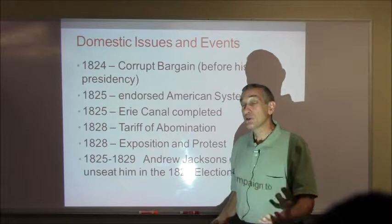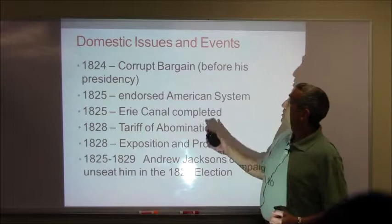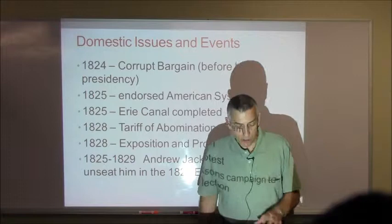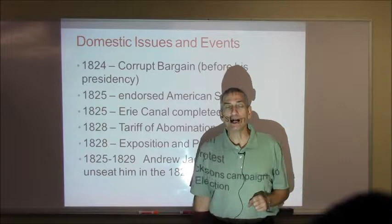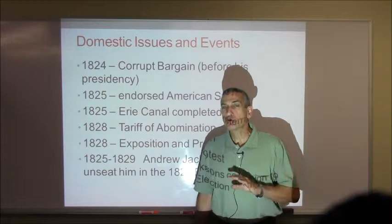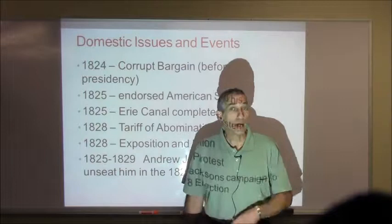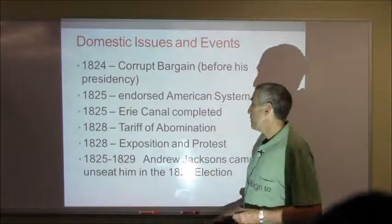Domestic issues and events: we have the corrupt bargain, which actually occurs during the Monroe presidency but hovers over the Quincy Adams presidency. He endorsed Henry Clay's American System — after all, Henry Clay was his Secretary of State. The Erie Canal was completed in 1825, an example of state-sponsored internal improvements. And then there's the Tariff of Abominations of 1828. John C. Calhoun called it the Tariff of Abominations because it was grossly unfair to the South and benefited the North. A protective tariff raises the price of imports; the South, being primarily agrarian, needed lots of imported goods, while the North was much more self-sufficient.